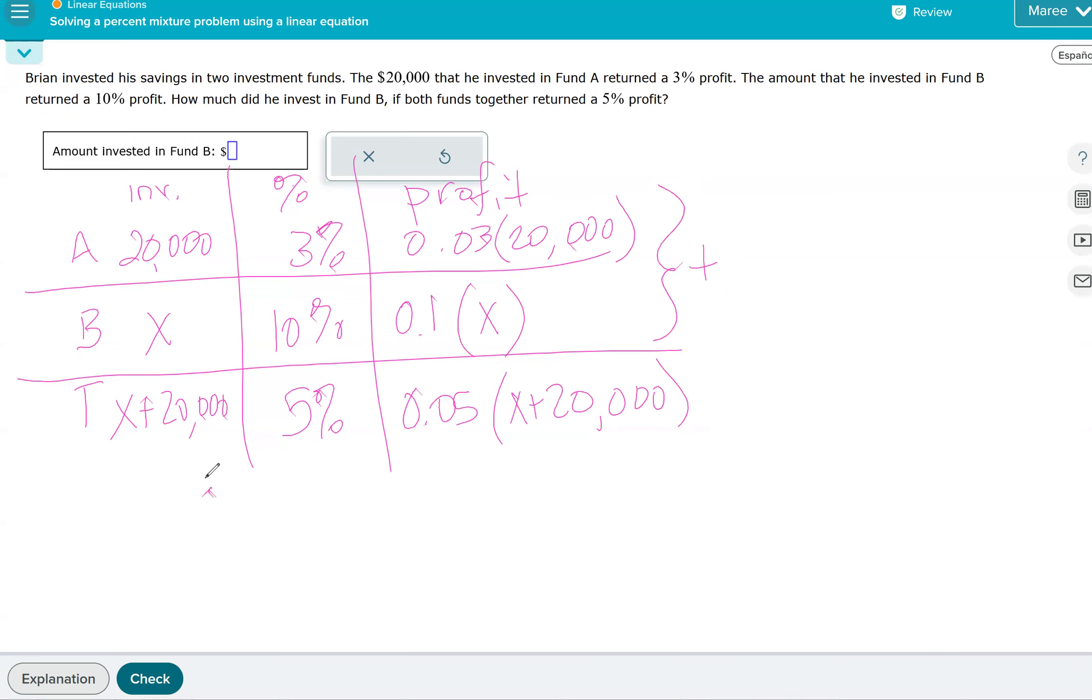So 0.03 times 20,000, and then we're going to add it to 0.1X and that has to equal 0.05 times X plus 20,000. Now let's multiply the entire equation by 100.